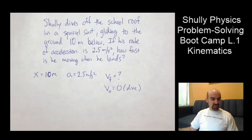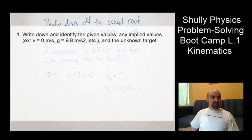So now I'm getting ready to move on to the next step. There's the first step. Write down and identify a given value. So there you see V equals zero. That gives an implied value there that we use that one. And we identified the unknown target. So next step.